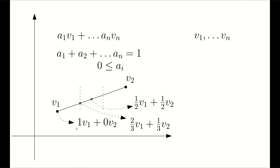There are two ways to define convex shapes. One is to say that a convex shape is the set of all points that are convex combinations of a number of vectors. Another way is to say that a convex shape is a shape where there are no holes in it — in other words, given any two points in the shape, the line segment connecting those two points should be inside the convex shape. Using this observation, it's relatively easy to prove that these two definitions of a convex object are equivalent.